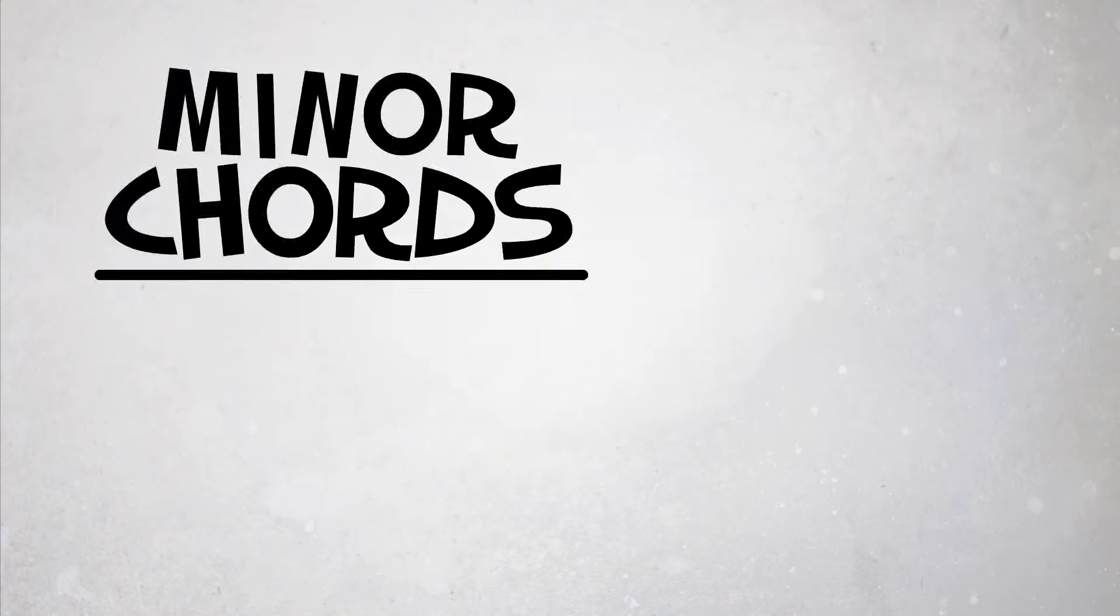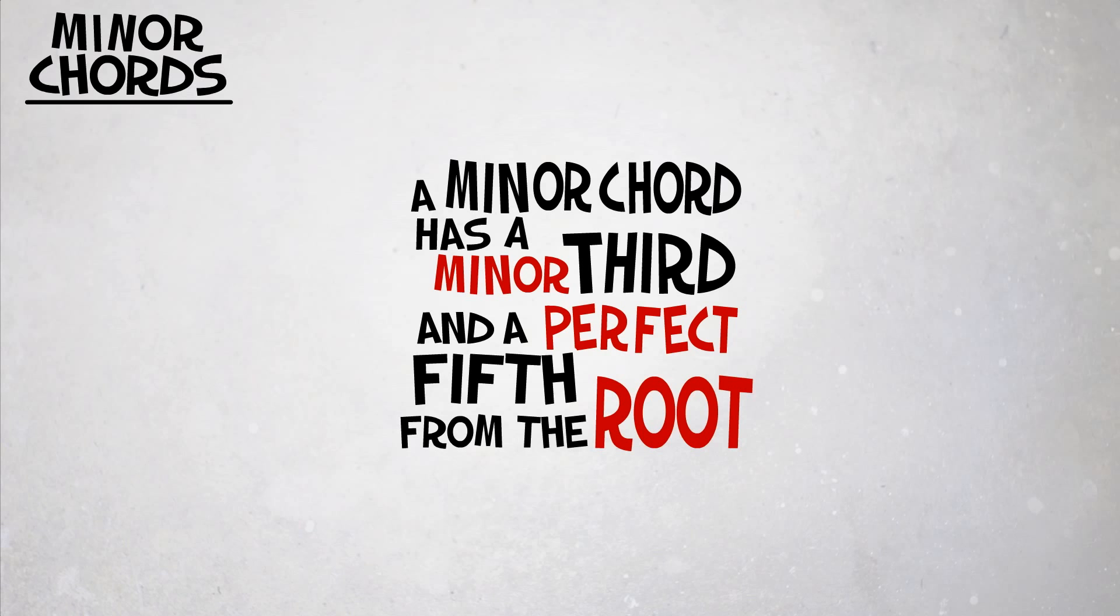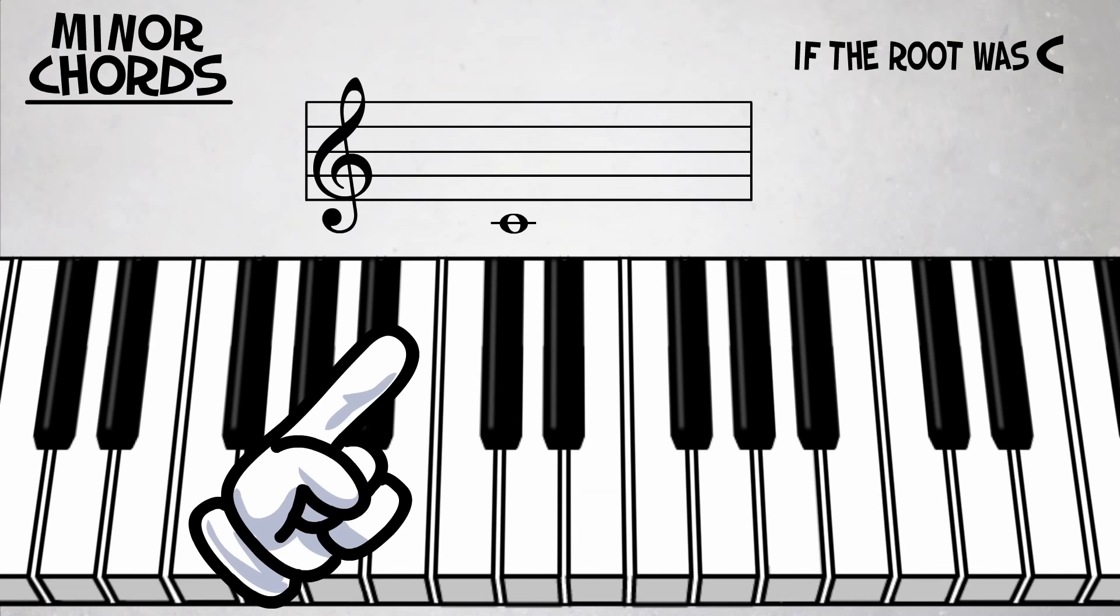Minor chords. The difference between a major chord and minor chord is the minor third instead of a major third. For example, if the root was C, the chord would be C, E flat,